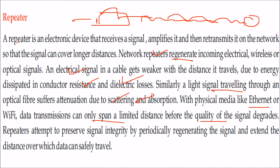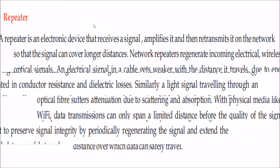What a repeater attempts to do is preserve signal integrity by giving it a boost or regenerating the signal, thereby extending the distance over which data can safely travel.